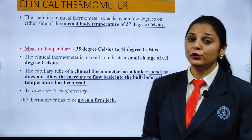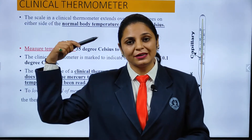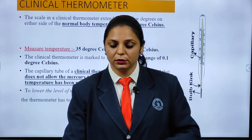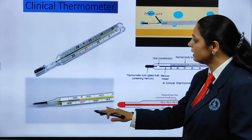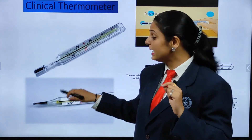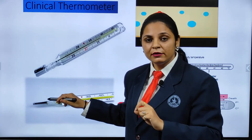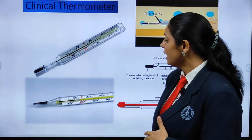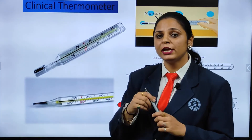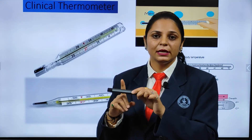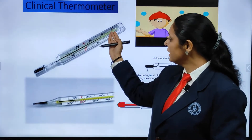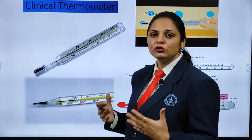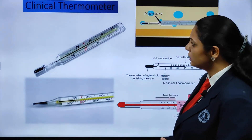If you want to use the thermometer for another person, you have to jerk it so that the mercury comes back down to below 35 degrees — the standard starting point — so that it can give an accurate temperature for the next person. This is how the clinical thermometer works: the capillary tube, the bulb filled with silvery mercury, and the kink ensure the reading is preserved until you are ready to record it.